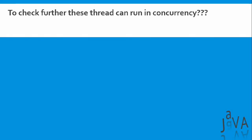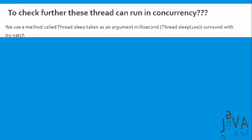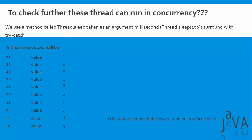To further verify that these threads run concurrently, we use a method called Thread.sleep(), which takes an argument in milliseconds and should be surrounded with a try-catch statement. In that case, the output will clearly show interleaved execution, confirming that the threads are running concurrently. Thank you.